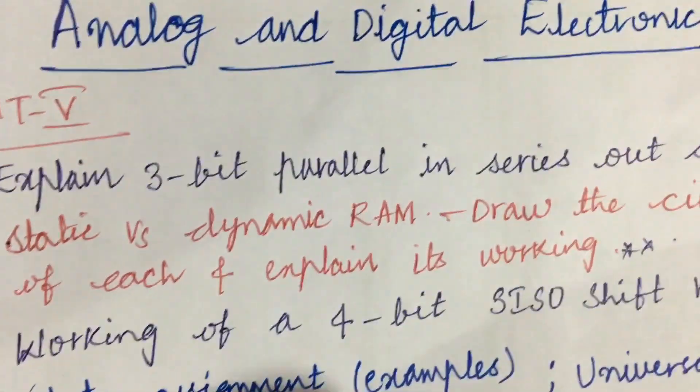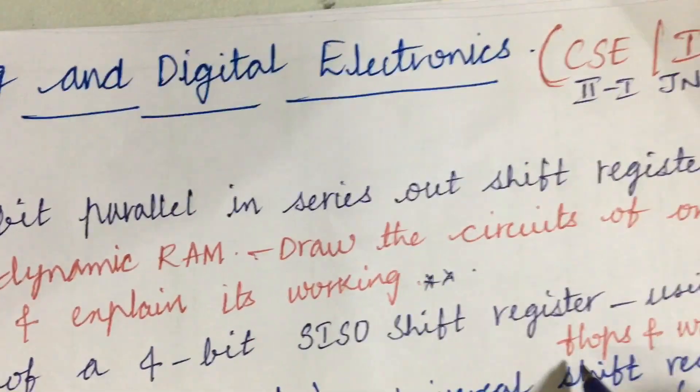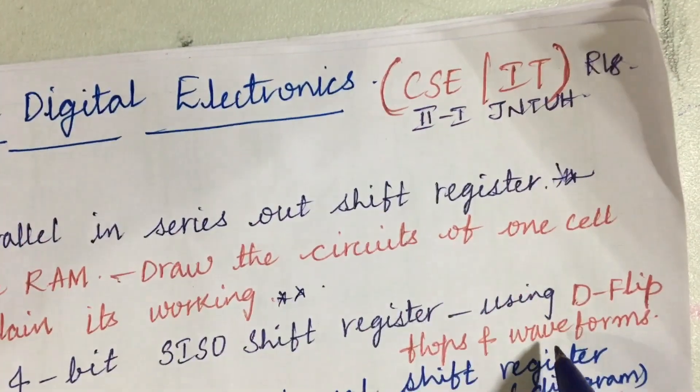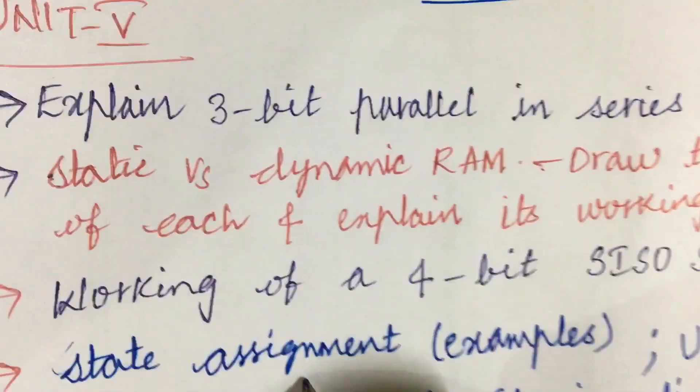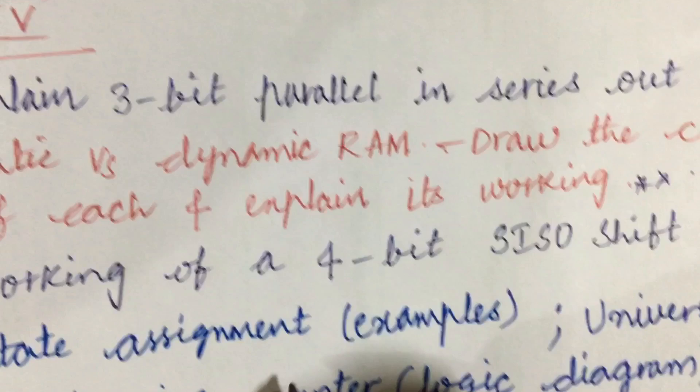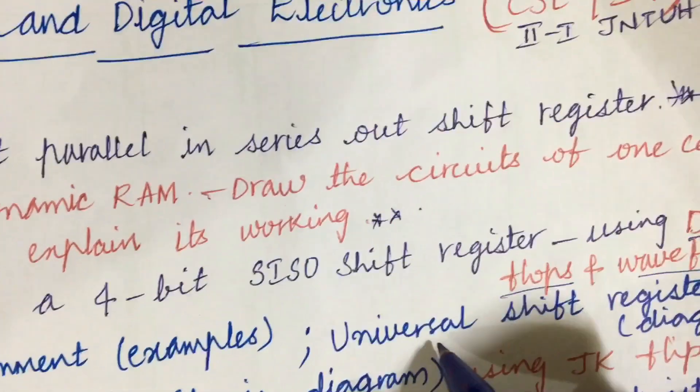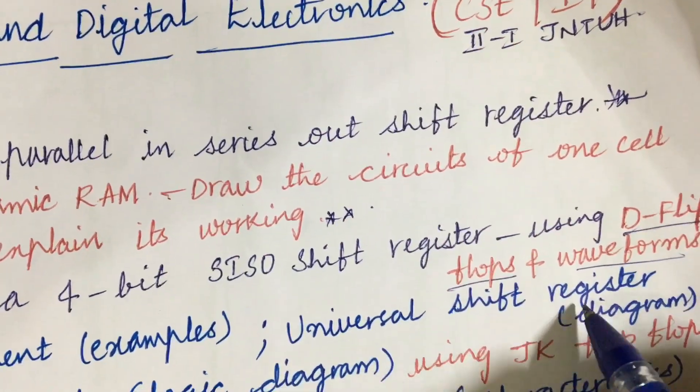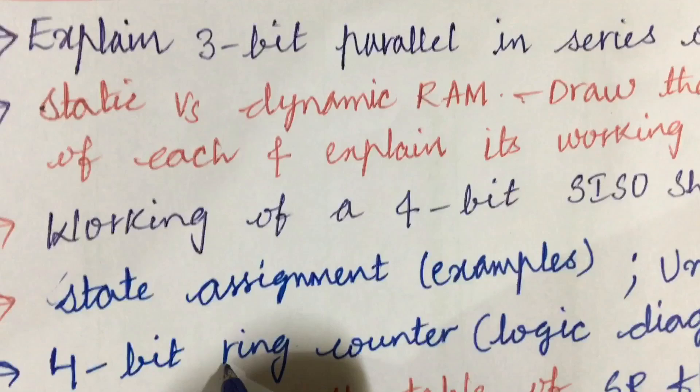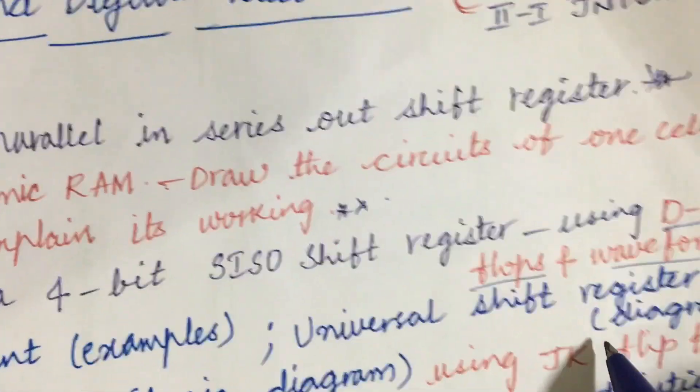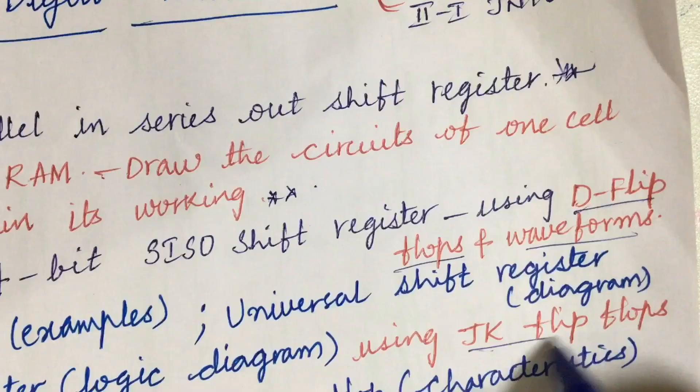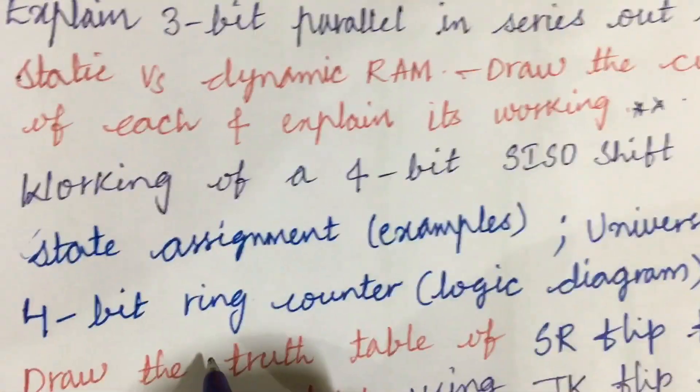The working of a 4-bit SISO shift register using D flip-flops and waveforms related to D flip-flops, you can expect this question. Also, state assignment along with its examples and explain universal shift register along with the diagram. Also, a 4-bit ring counter logic diagram using JK flip-flops. Related to flip-flops you are going to get one question for sure, dear students.